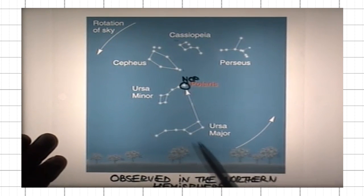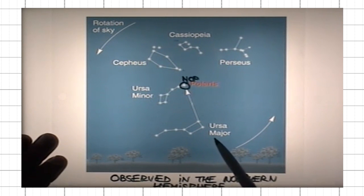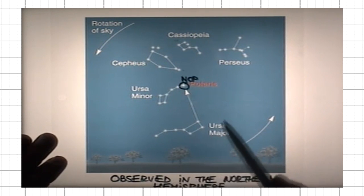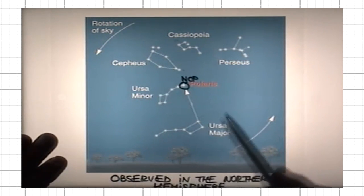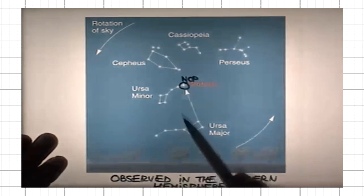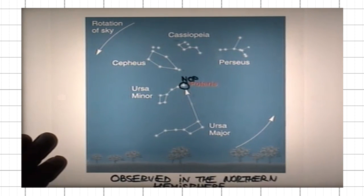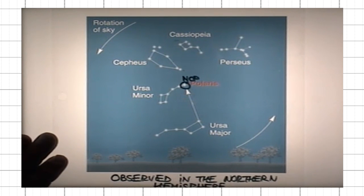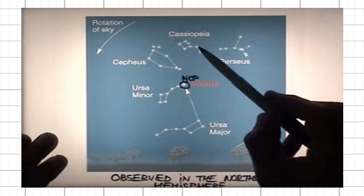These stars that make up the Big Dipper, part of Ursa Major, and the Little Dipper, they are constantly visible because they are close enough to the North Celestial Pole. They never rise or set above or below the horizon. Other examples are these ones,